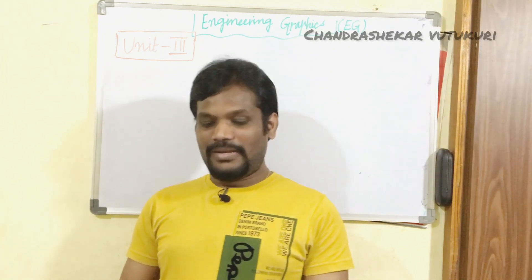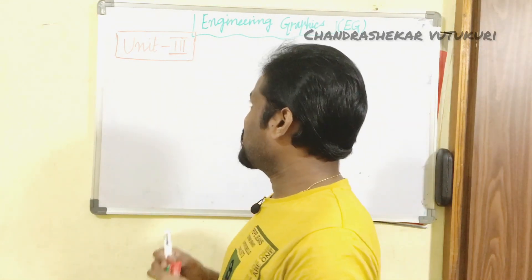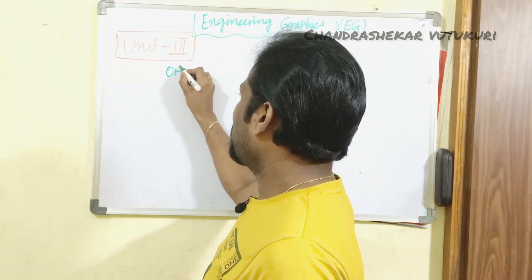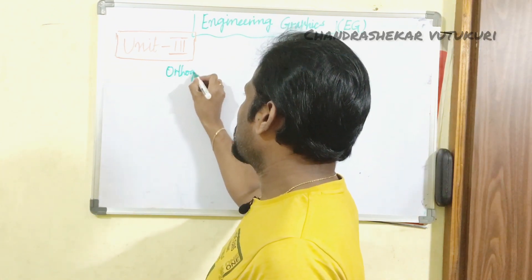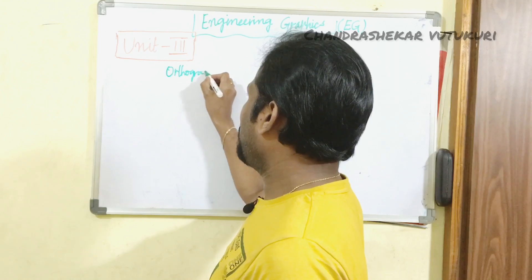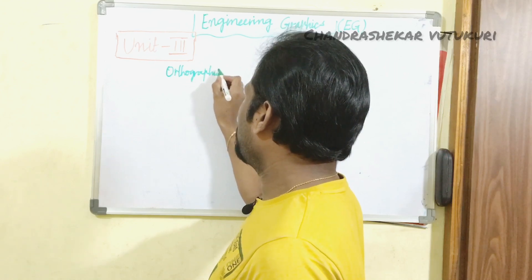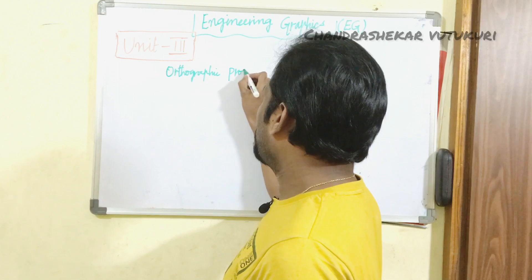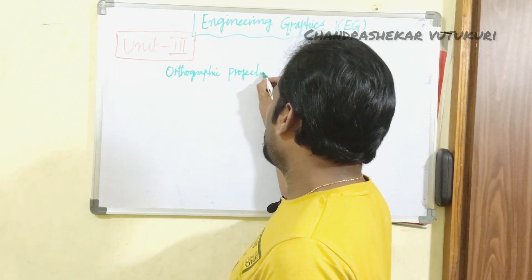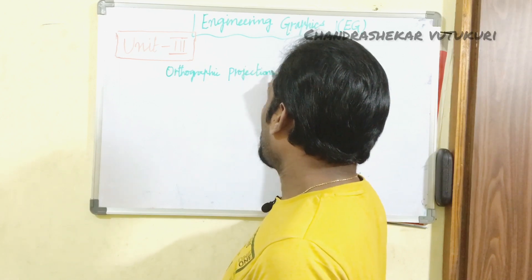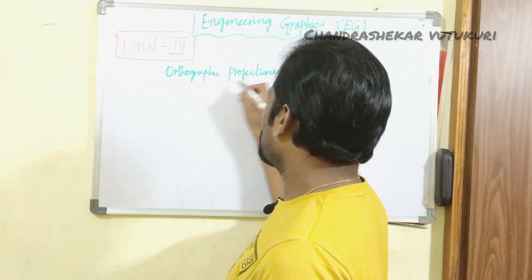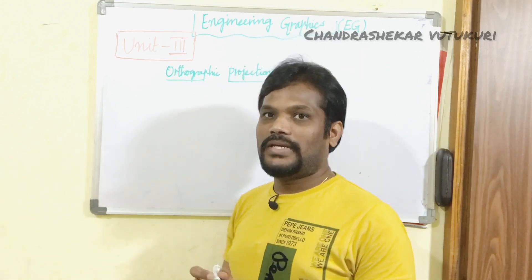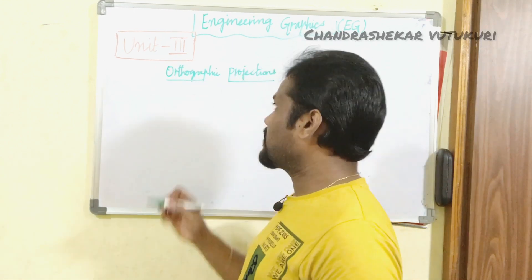Unit 3 is all about orthographic projections. As mentioned in the earlier video, the 2nd, 3rd, 4th, and 5th units are all about orthographic projections. In the 5th unit we will also be seeing a part of isometric projection. The topic covered in Unit 3 is all about solids.